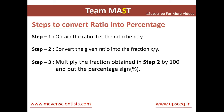Step 1: we'll obtain the ratio — let's say it is x:y. In the next step, Step 2, we'll convert it into a fraction, writing it in the form of x divided by y.